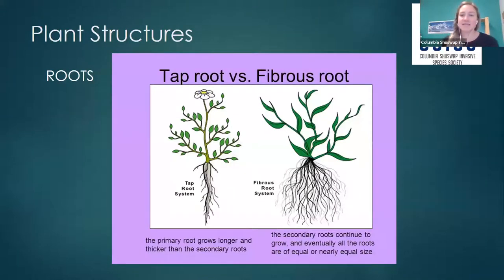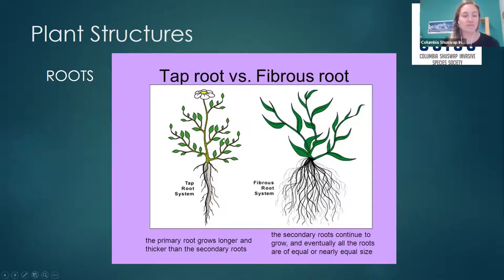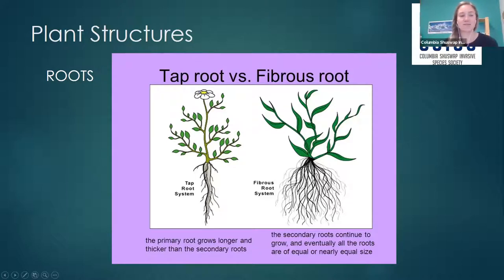Some plants in the Apiaceae family have an edible taproot, where the primary root grows longer and thicker than the secondary roots. In contrast, a fibrous root system is one where the secondary roots continue to grow until all the roots are roughly the same size.